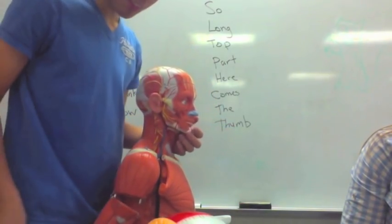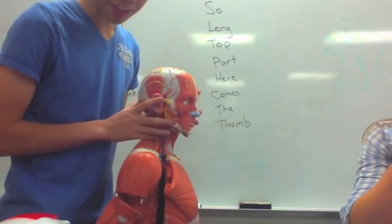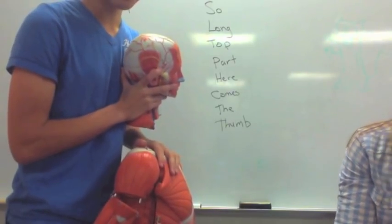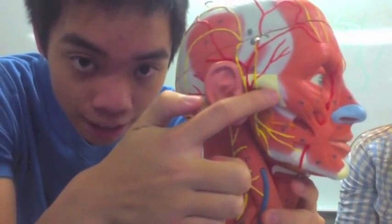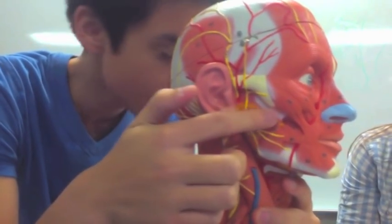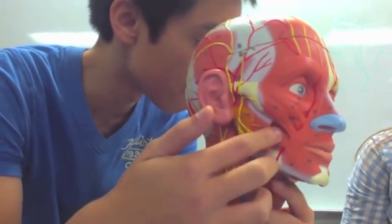Dr. Musselman is going to show you the muscles right here. This muscle that goes from your zygomatic bone down to your mandible is called your masseter. The muscle that goes across right here — this area — is called the buccinator.